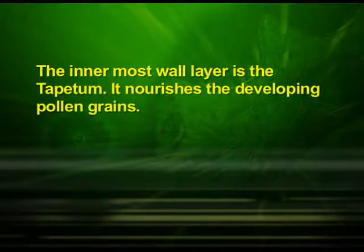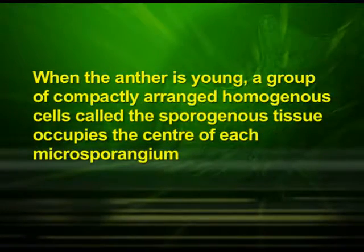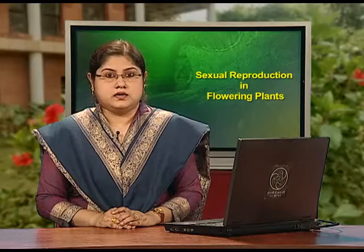The outer three wall layers perform the function of protection and help in dehiscence of anther to release the pollen. The innermost wall layer is the tapetum. It nourishes the developing pollen grains. Cells of the tapetum possess dense cytoplasm and generally have more than one nucleus. When the anther is young, a group of compactly arranged homogenous cells called the sporogenous tissue occupies the center of each microsporangium.